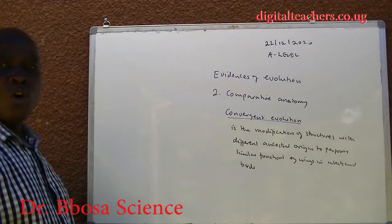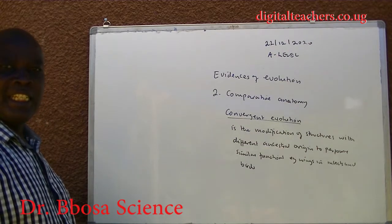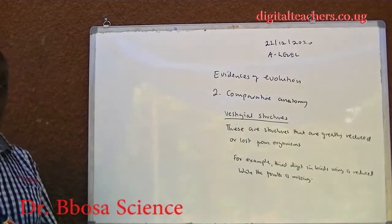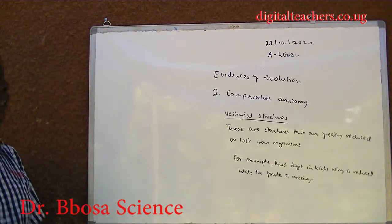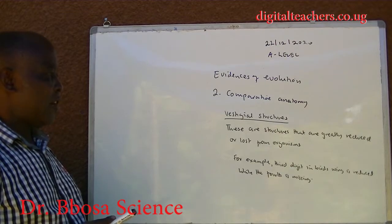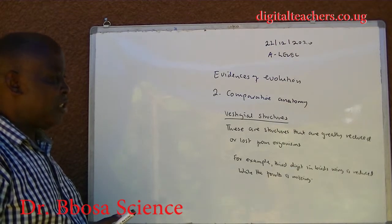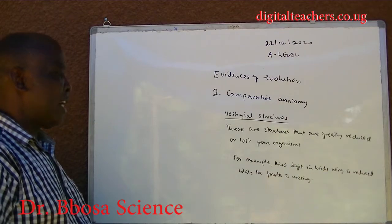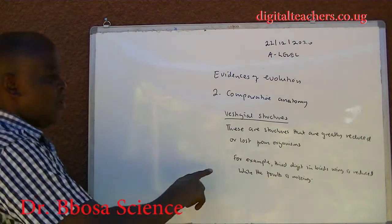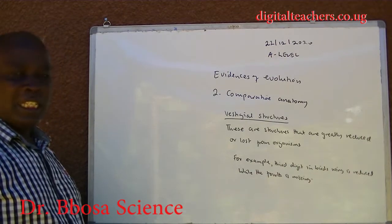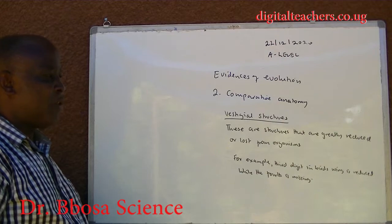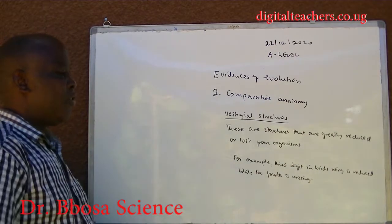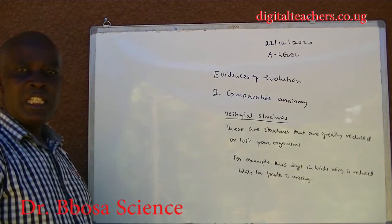Convergent evolution is the modification of structures with different ancestral origins to perform similar functions. For example, wings in insects and birds. Vestigial structures are structures that are reduced or lost from organisms. For example, the third digit in the bird's wings is reduced, while the fourth is missing.